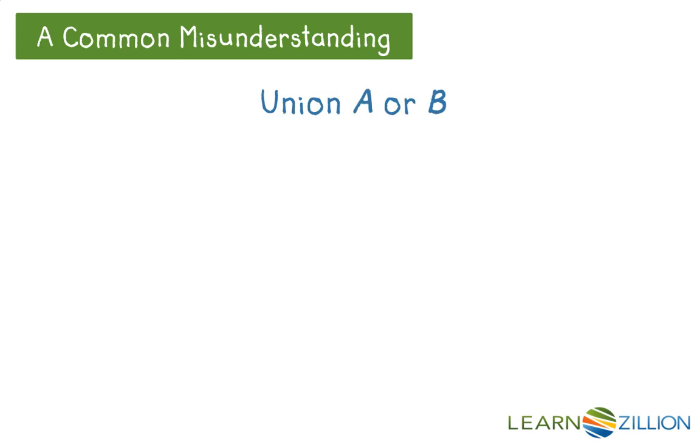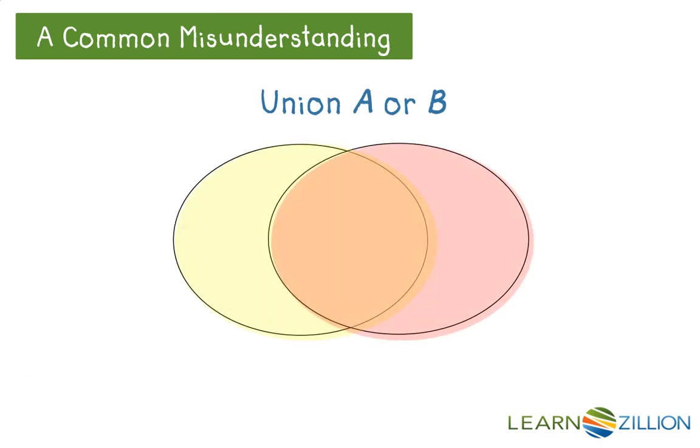A common misunderstanding is distinguishing between the concept of union and that of intersection. Union is the regions that are yellow, orange, and red, whereas intersection is only the region that is orange.